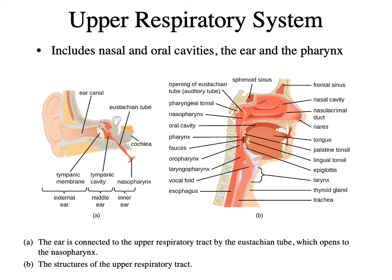If you have not had anatomy and physiology, these are images of the upper respiratory system, which includes the nasal and oral cavities, the ear, and the pharynx. For our purposes, you can think of the pharynx as the throat. There are many different structures in the upper respiratory system that can help to be one of the first defenses against the entry of microorganisms — tonsils, mucous membranes, epithelial layers — that can trap microorganisms and prevent them from descending further down into the respiratory tract.